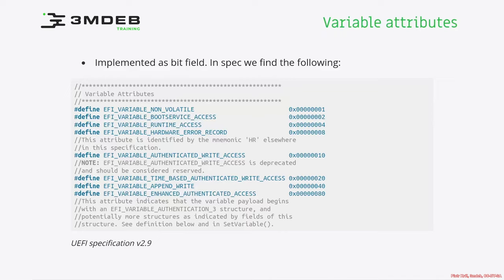VendorGUID is a GUID which provides a unique namespace for various variable names. Thanks to VendorGUID, we can avoid collision between the same variable names which may be used in the system by various vendors. Each vendor should use its own VendorGUID, creating its own namespace, so there can be multiple identical variable names but in different VendorGUID spaces.